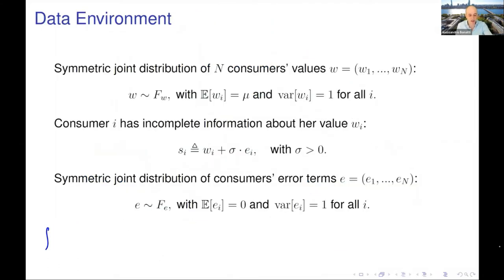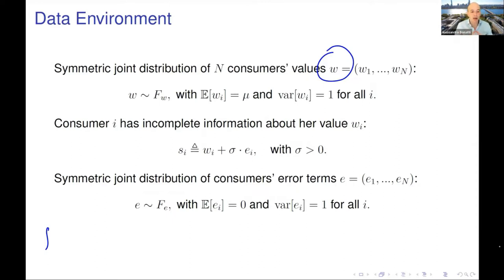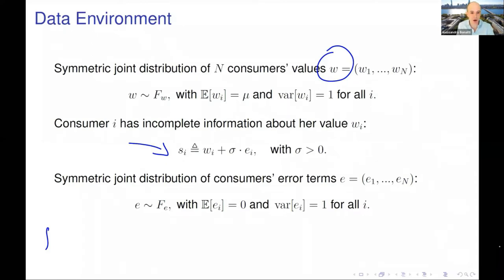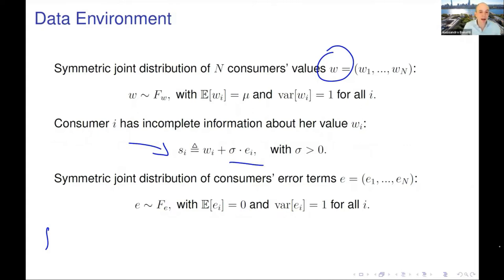We have a symmetric distribution of consumers' values, or their true types w_i. Critically, each consumer does not know their value perfectly; they only observe an informative signal of it. We require that the error terms in each consumer's signal are independent of the values, and that the errors and fundamentals are symmetrically distributed. So I would like to know my w_i, but I only observe my s_i — and so does everybody else.